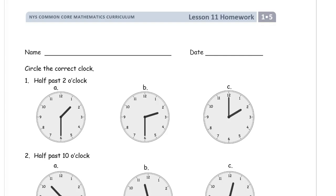Welcome to the homework for lesson 11. This is module 5 of first grade. Get your name on here first, please. And then it says circle the correct clock.